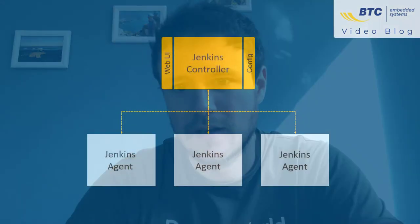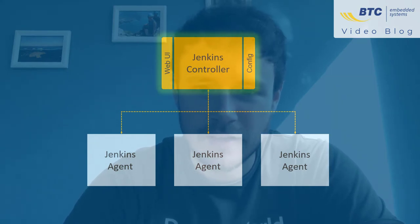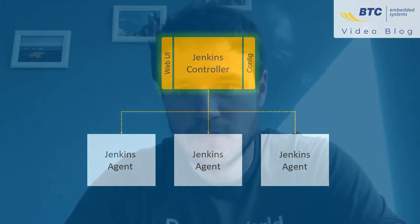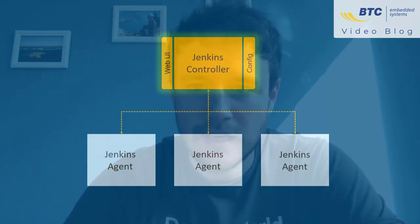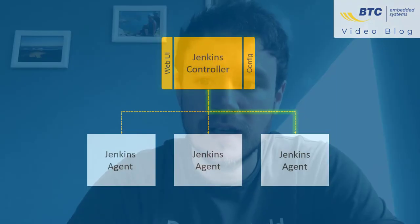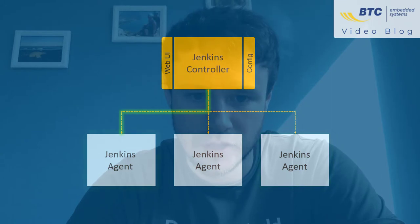When you install Jenkins, you're actually installing the Jenkins controller. It allows for centralized configuration, provides the web interface, and distributes the load of all jobs. The actual work — for instance, a build job that compiles your code and runs your tests — is passed along to an executor node on a Jenkins agent.